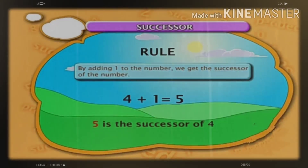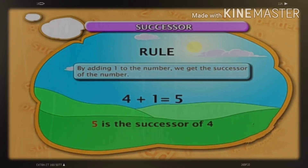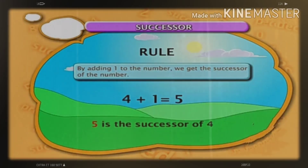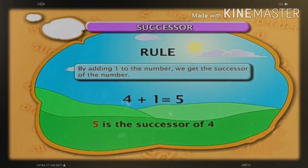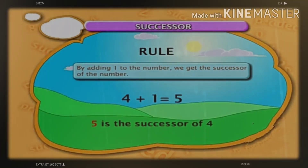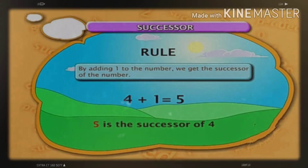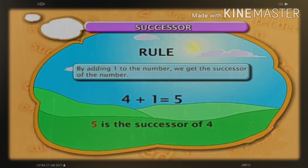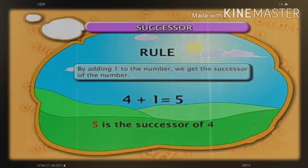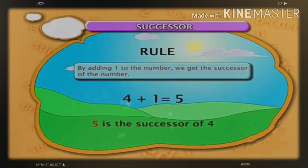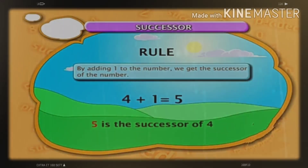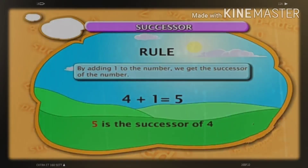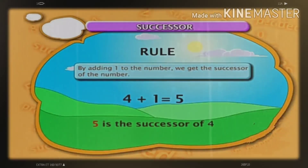So when we find out what comes after a particular number, we have to add 1 to that number. For example, 4 plus 1 is equal to 5. 5 is the successor of 4.